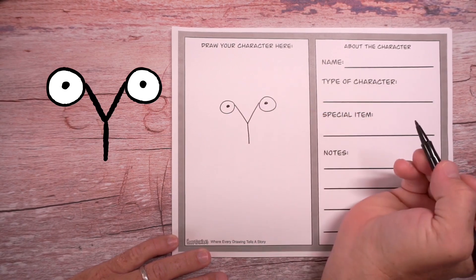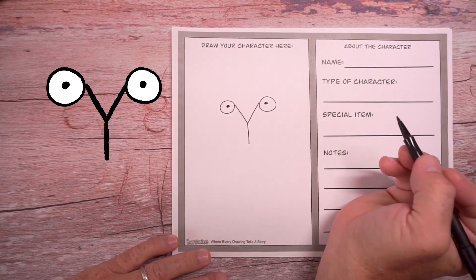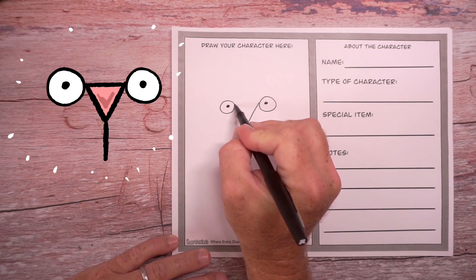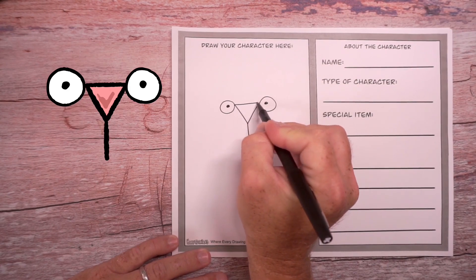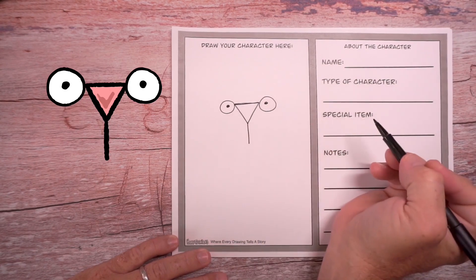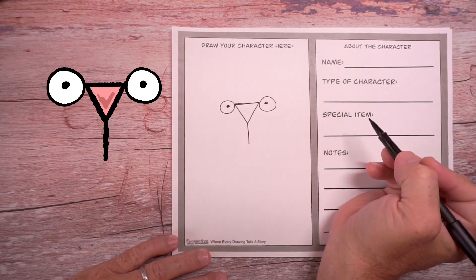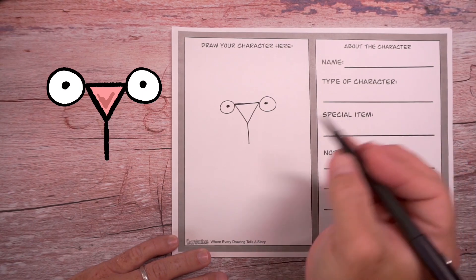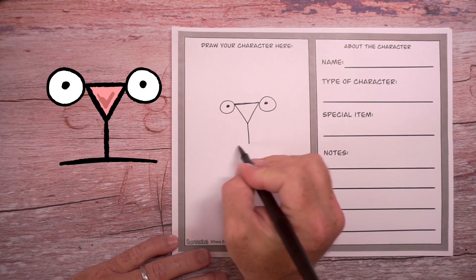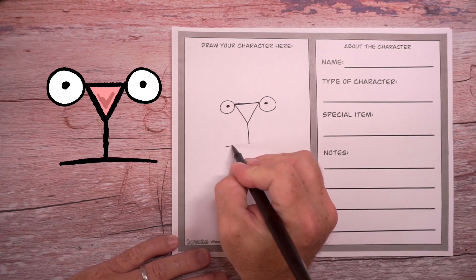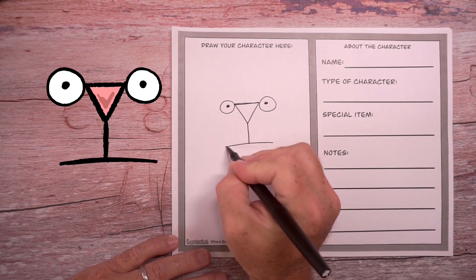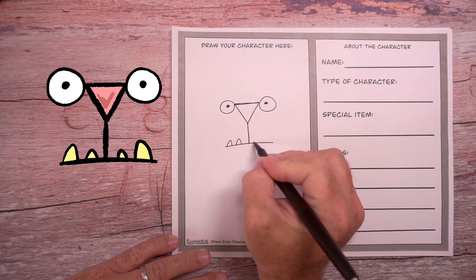Next, we're going to draw the monster's nose right here. And then let's draw a line here at the bottom — that's the monster's mouth. And we can draw some little teeth poking out of this.